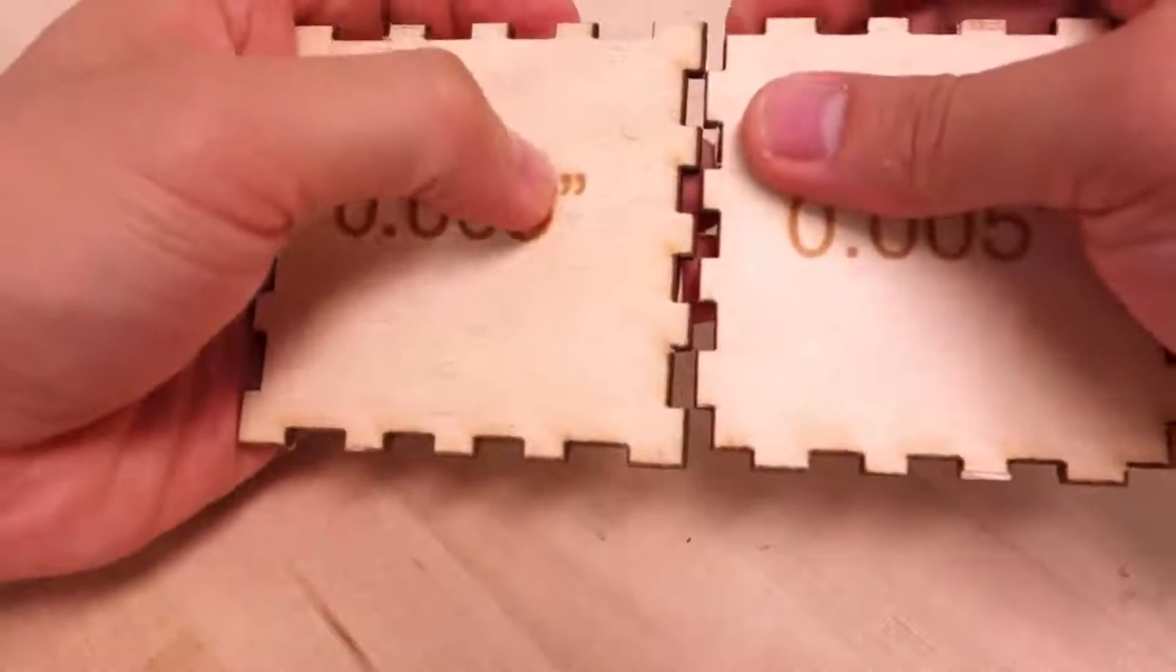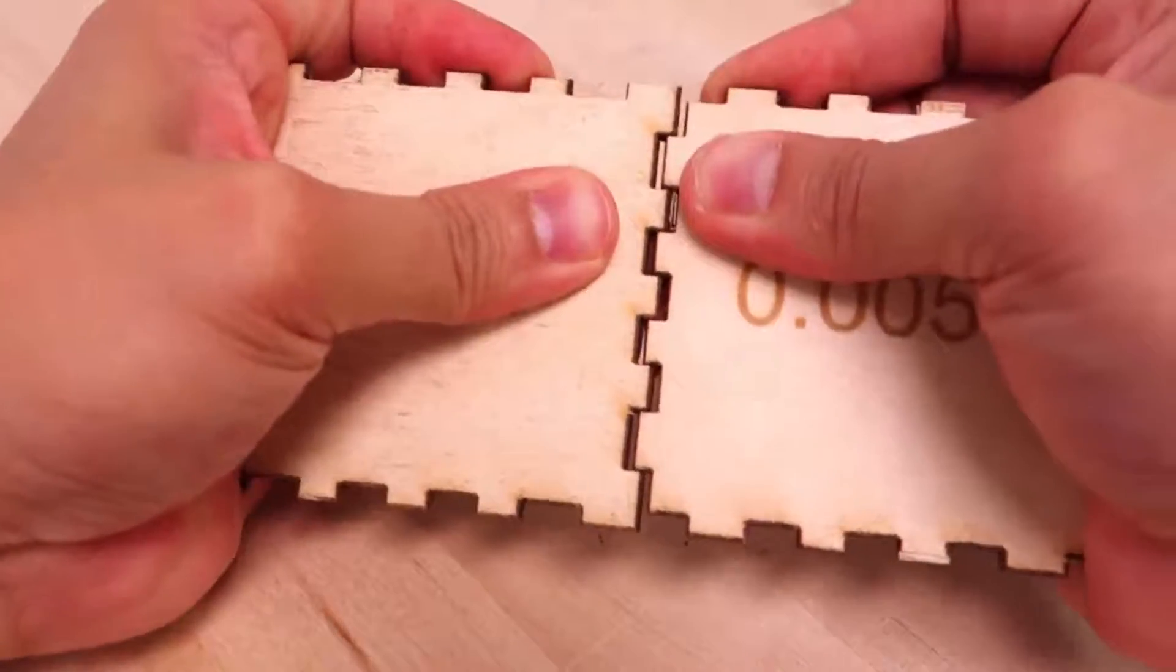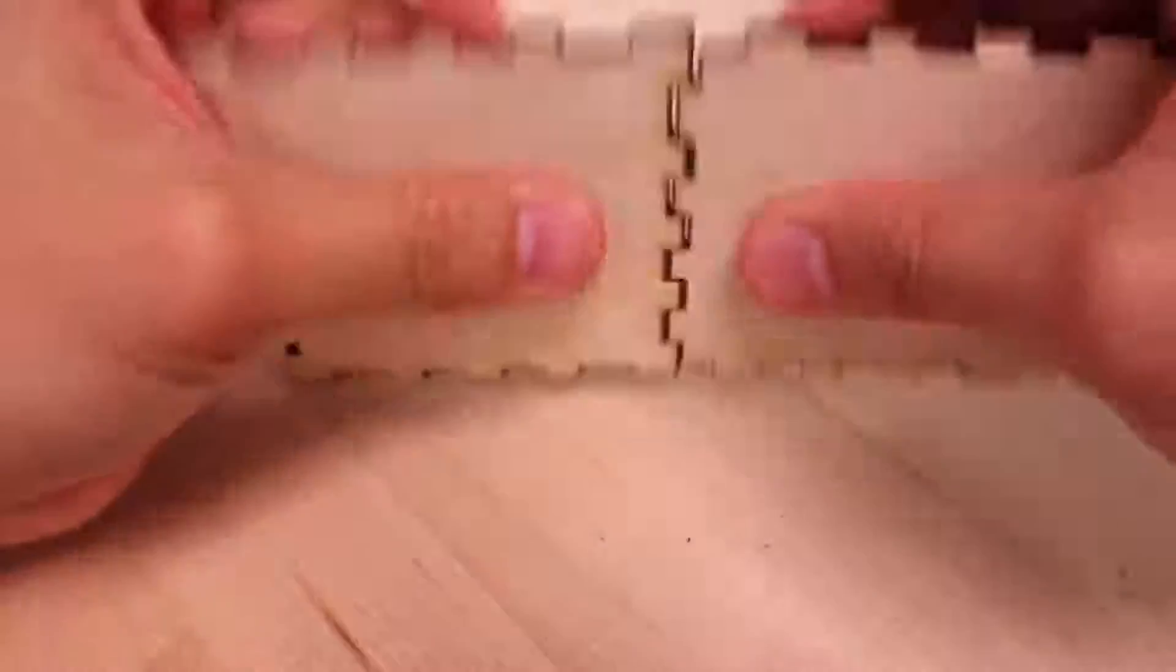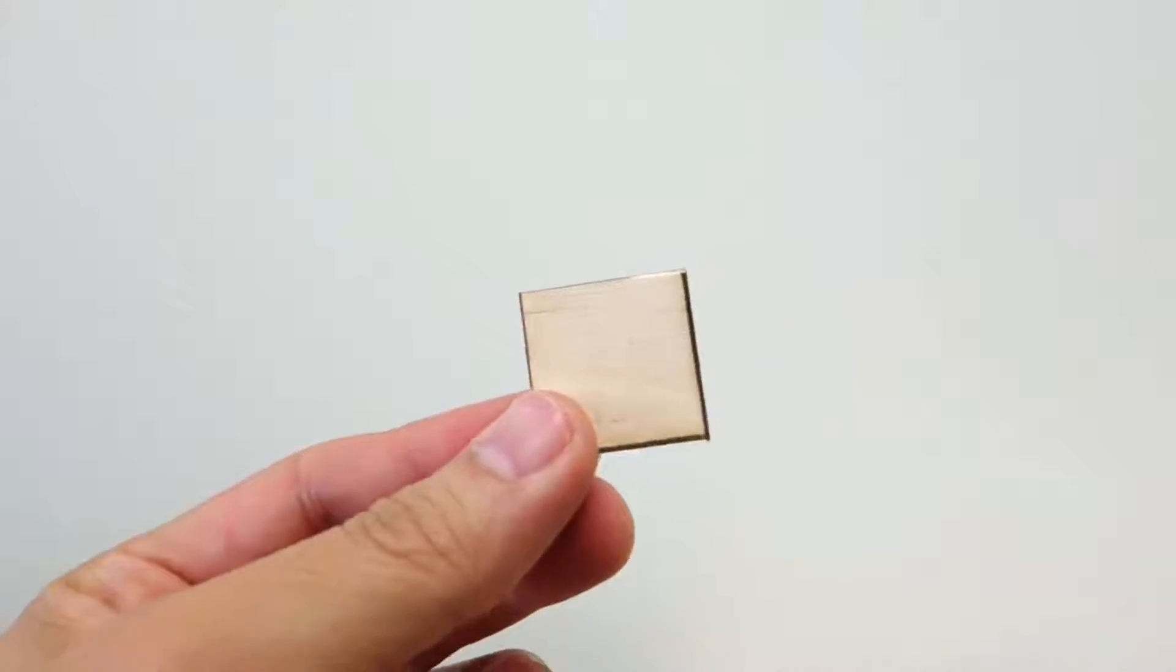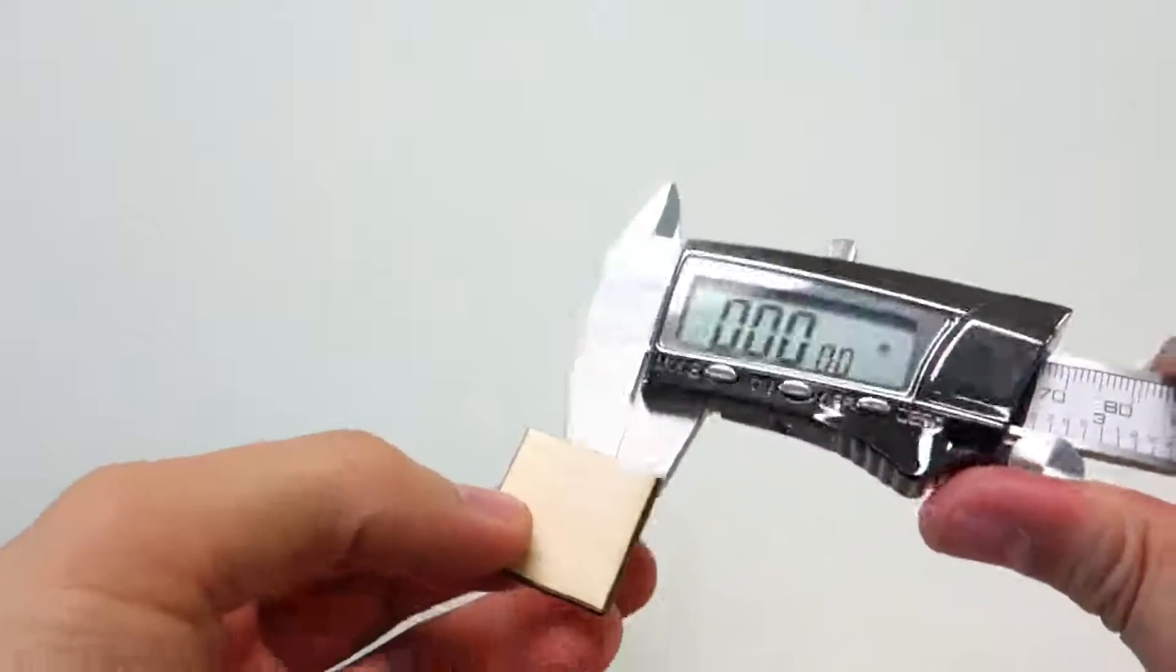For this material which is 5 millimeter plywood 0.005 as the kerf is what's going to get our best results. So by understanding kerf you can adjust your joints to be loose or tight.